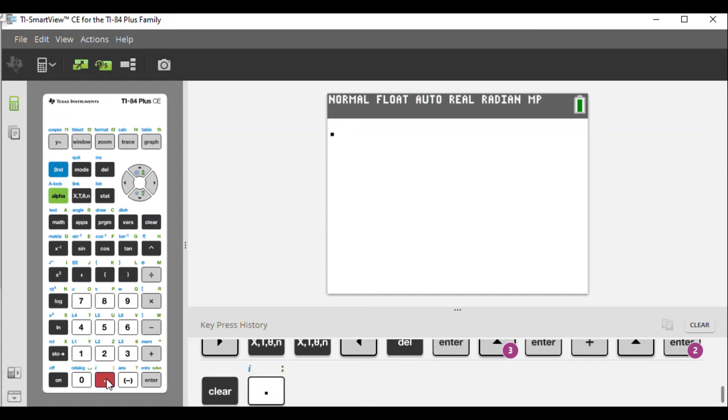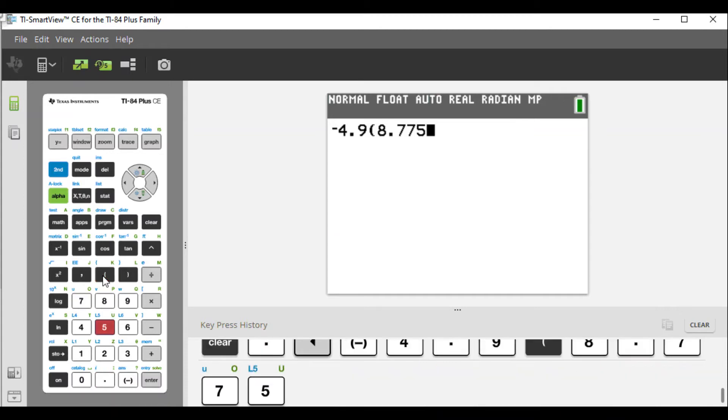So negative 4.9. When we type it in, I'll use parentheses here. The number we're typing is 8.775. Close parenthesis and square this. We're typing in the time to figure out the height because they gave us the formula. This is the form: negative 4.9t² plus 86t.